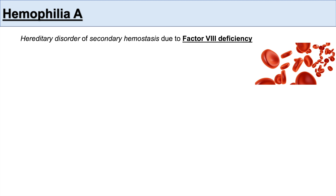Hemophilia A is a hereditary disorder of secondary hemostasis due to factor VIII deficiency. This leads to the inability to form fibrin clots adequately. We're going to show the coagulation cascade and how both hemophilias can alter fibrin clot formation.